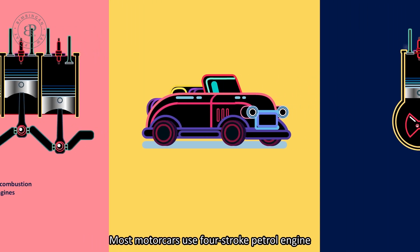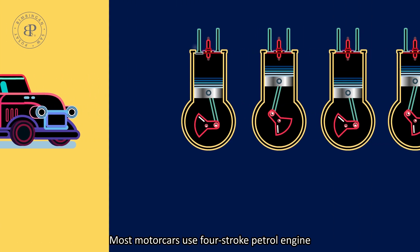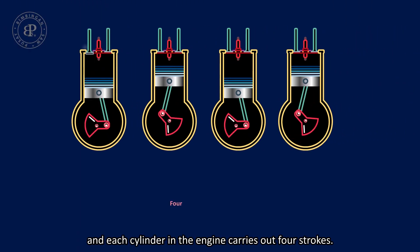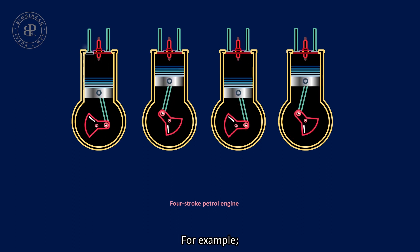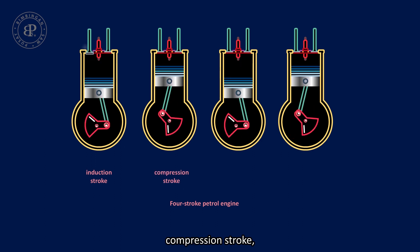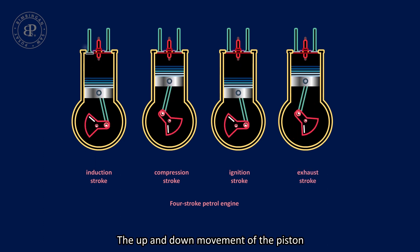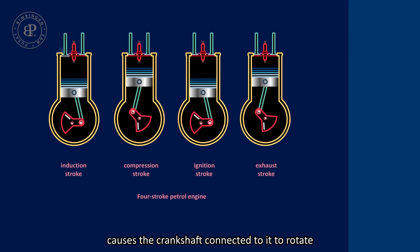Most motorcars use a four-stroke petrol engine, and each cylinder in the engine carries out four strokes: the induction stroke, compression stroke, ignition stroke, and the exhaust stroke. The up and down movement of the piston causes the crankshaft connected to it to rotate.